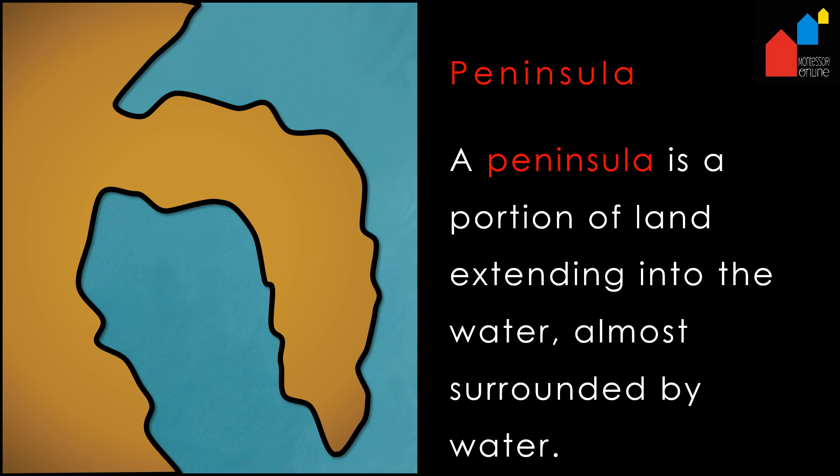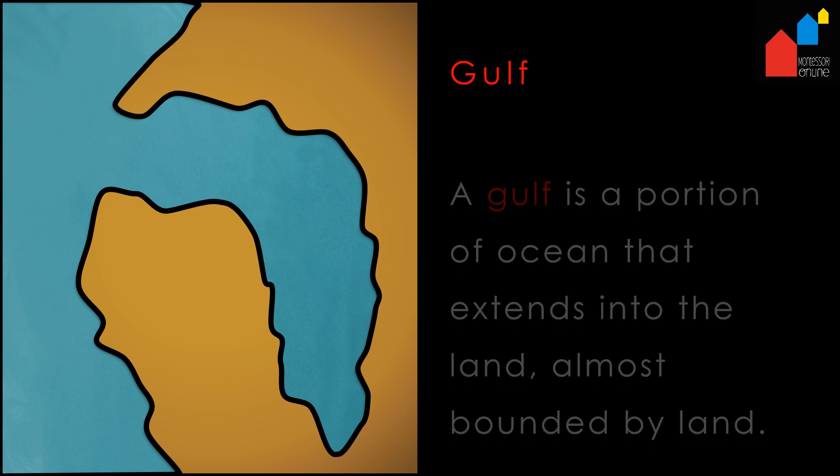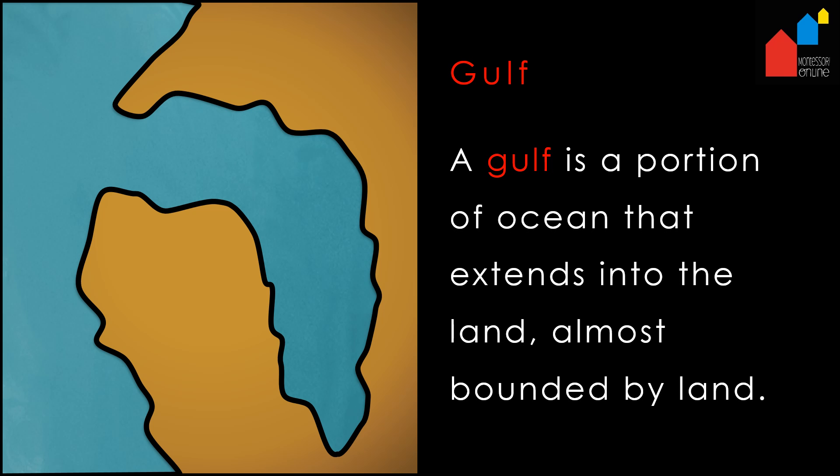A peninsula is a portion of land extending into the water, almost surrounded by water. A gulf is a portion of ocean that extends into the land, almost bounded by land.